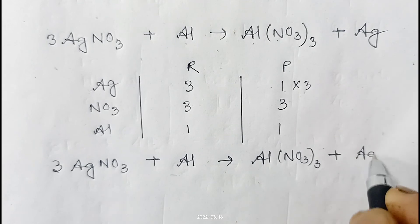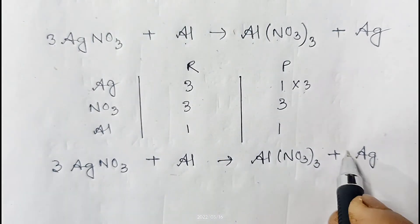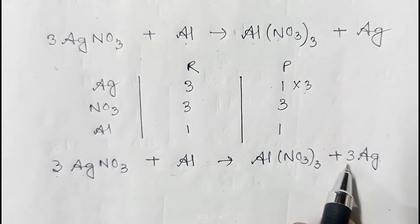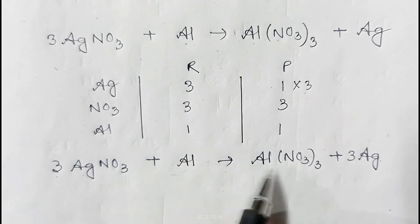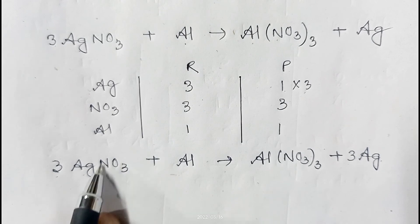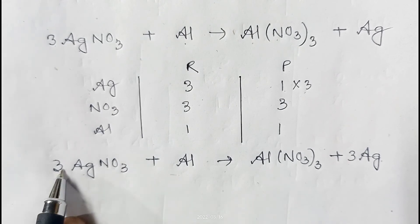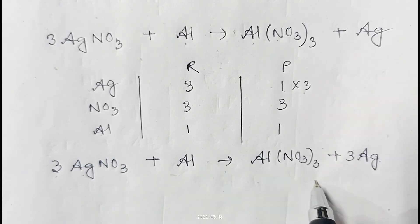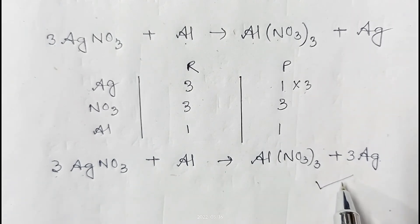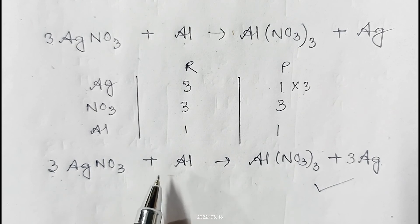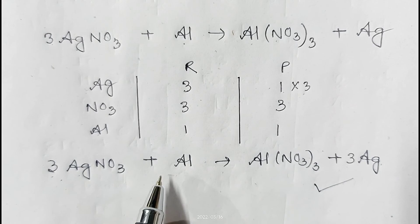We multiply Ag on the product side by 3, giving: 3AgNO₃ + Al → Al(NO₃)₃ + 3Ag. Now check: three atoms of silver on each side, one aluminium on each side, and the NO₃ radical is three on each side. The equation is fully balanced. I hope how to balance a chemical equation is now clear. Since there is no ready-made process, you have to use the trial and error method. Thank you for watching.